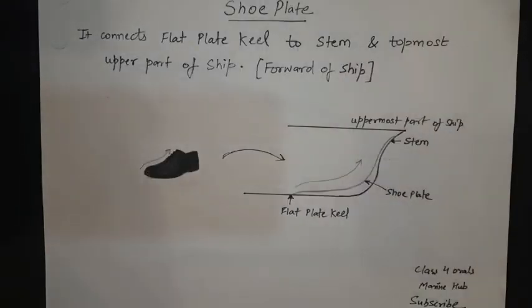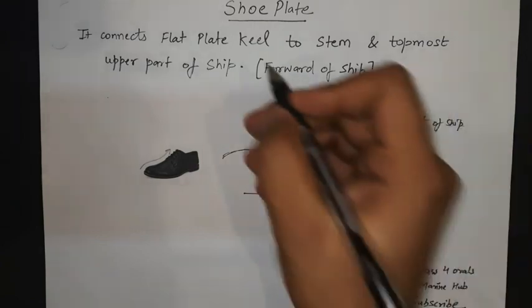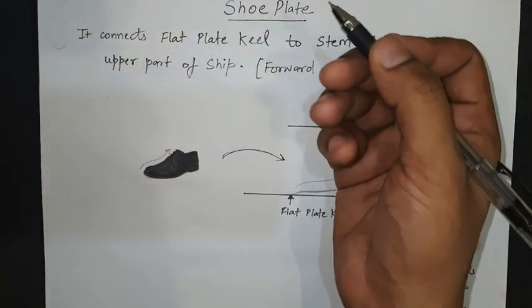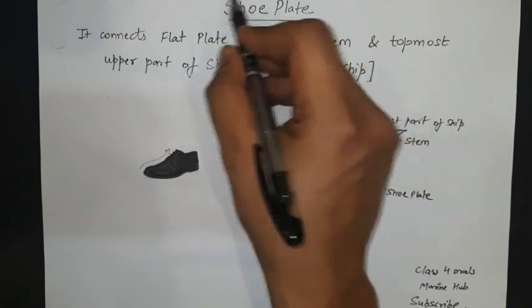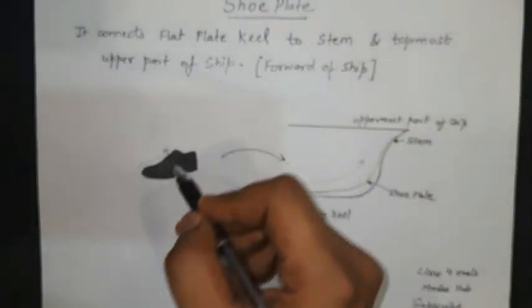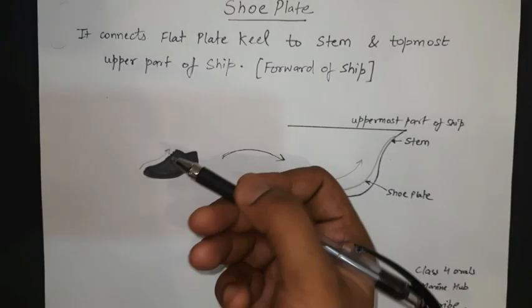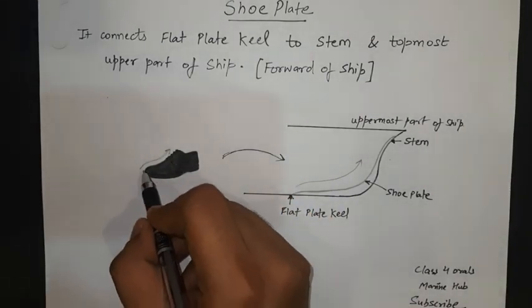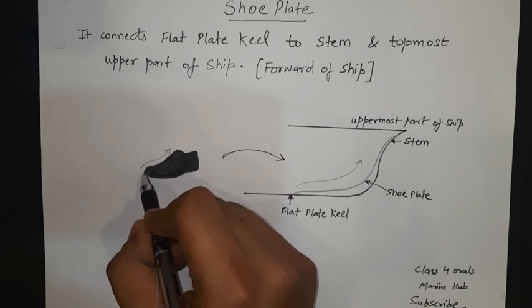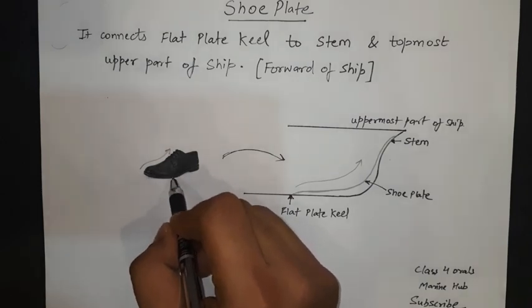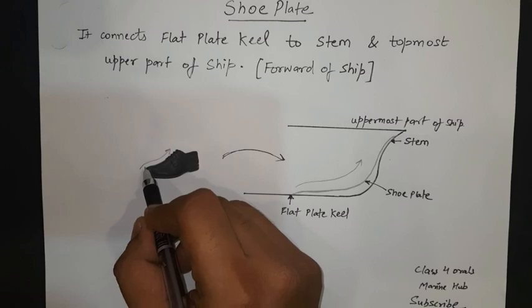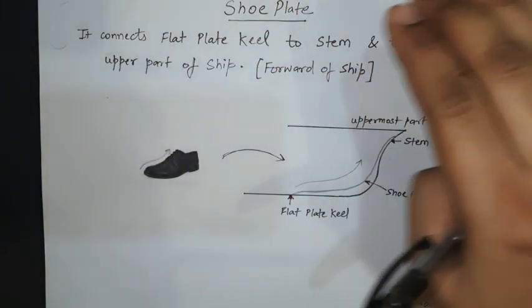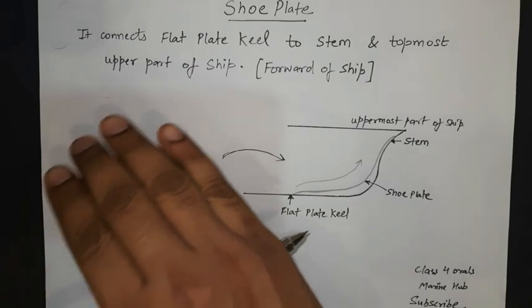Moving further to the last plate, which is the shoe plate. Before the definition, I would like you to focus on the word shoe. We all know what a shoe looks like. This is a shoe — please carefully observe the shoe shape. This is the leather part and it connects to the bottom part, the shoe frontal. It is covering the front part in the form of a layer.